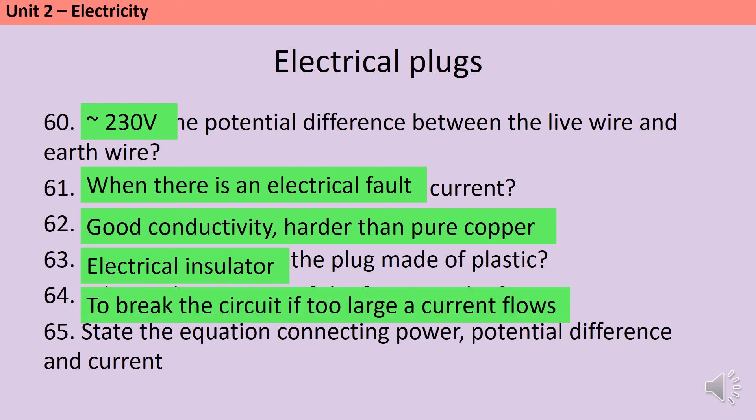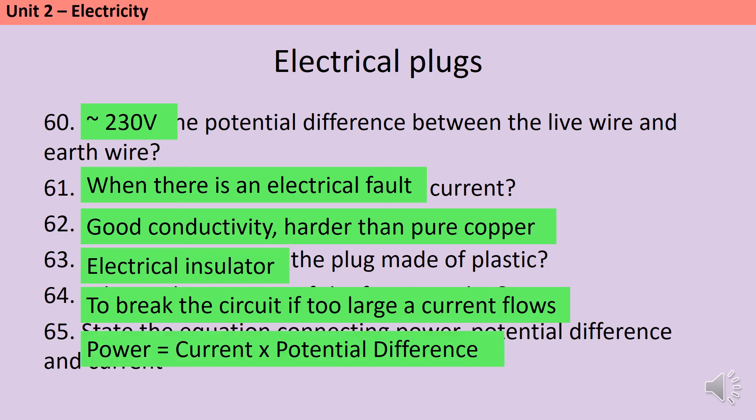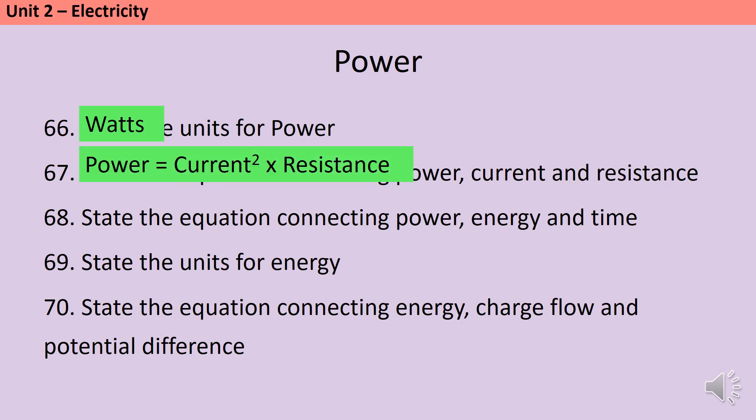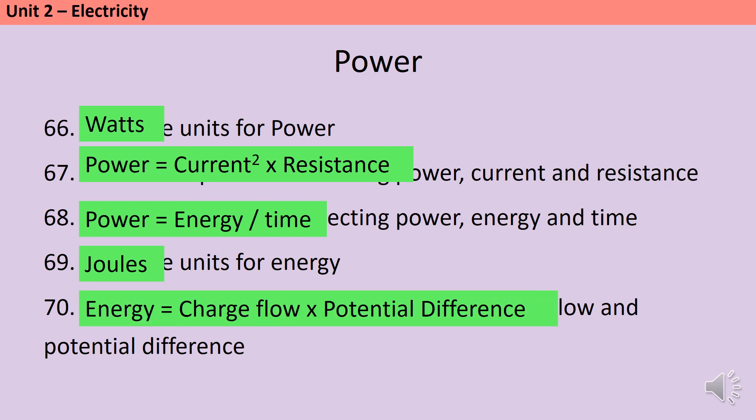The equation connecting power, potential difference, and current is P equals I times V, or in other words, power is current times potential difference. Power is measured in watts, and power is also current squared times resistance. Power is also energy divided by time, where energy is measured in joules with a capital J. We can also connect energy, charge flow, and potential difference using the equation energy equals charge flow multiplied by potential difference.